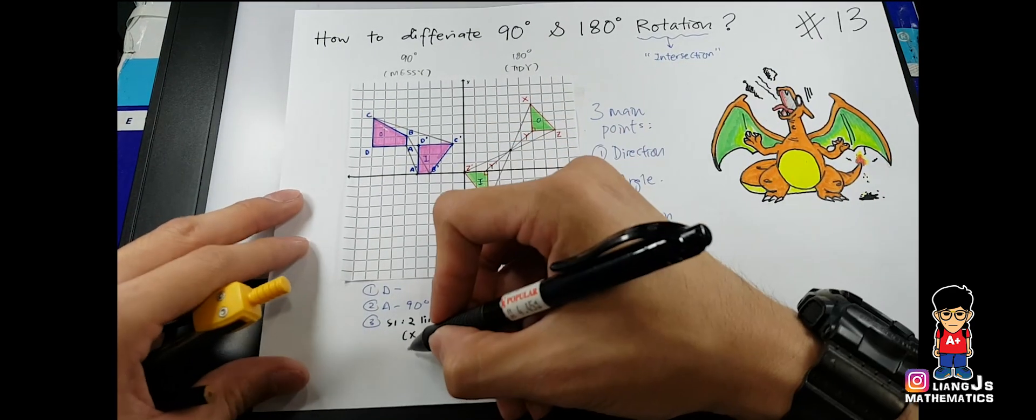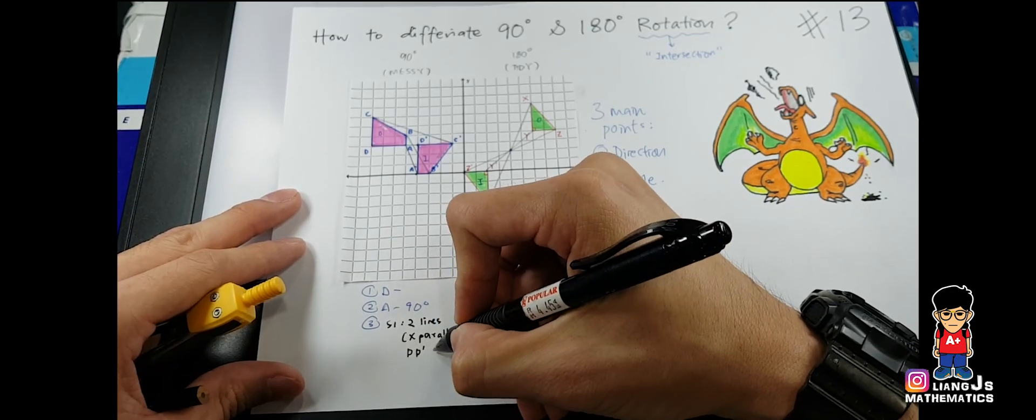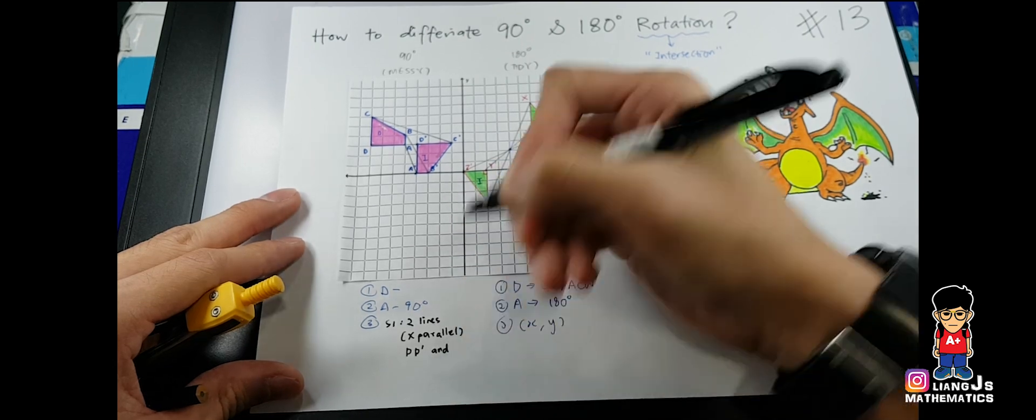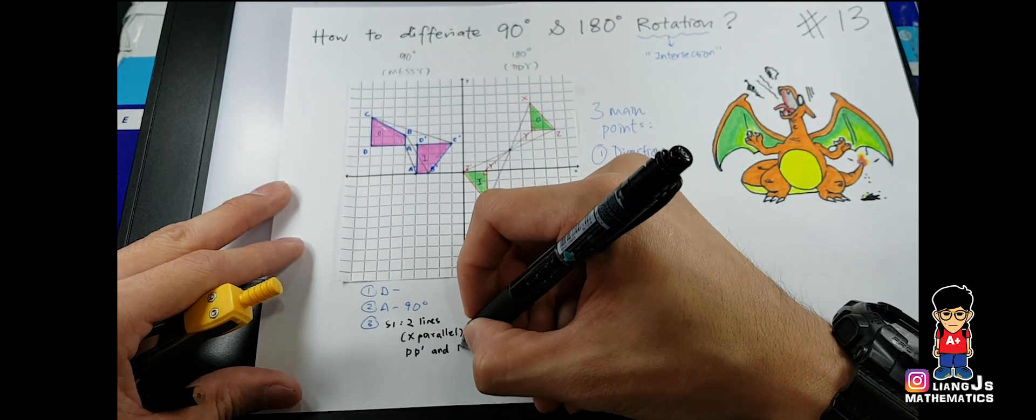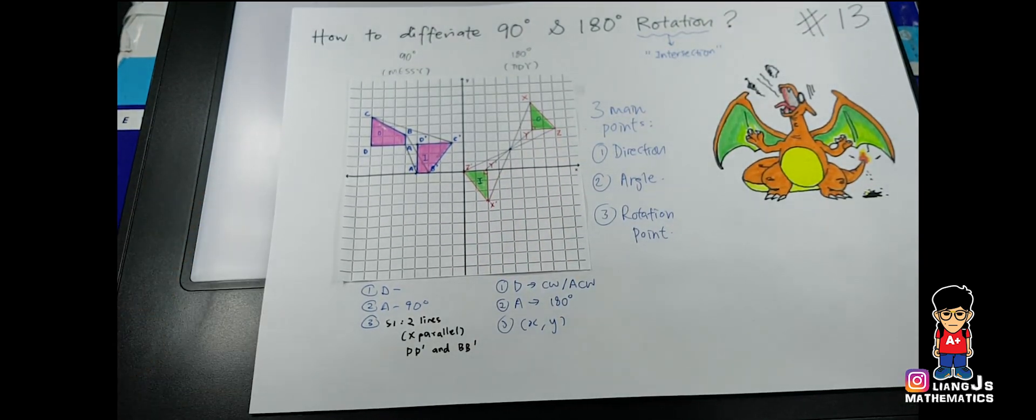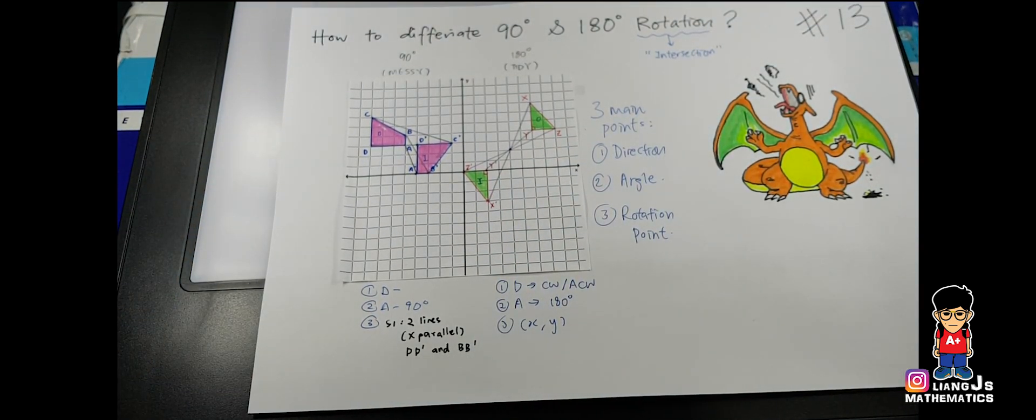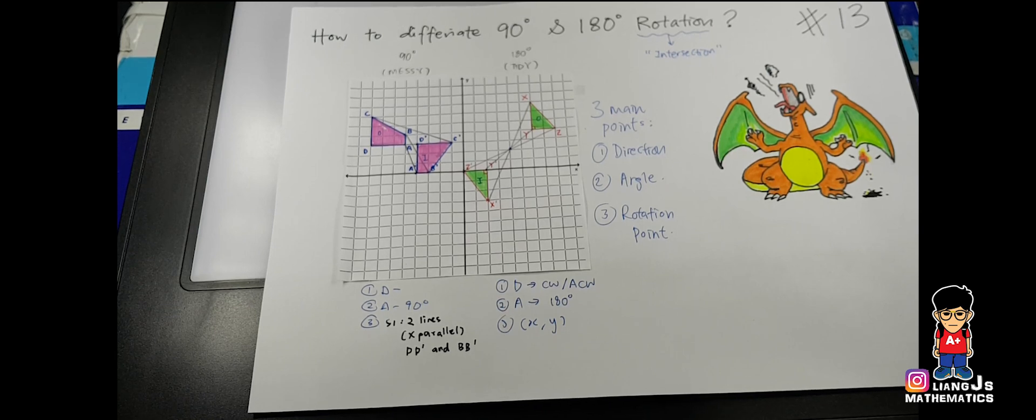Let's select D, D prime. Then after that, the other one, I will select, let's go for B and B prime. So I'll be taking these two lines. And some of you might say, hey, can I use other lines? Why not? You can go for that.